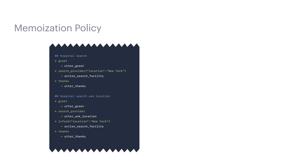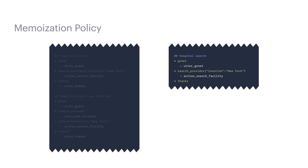Now let's talk about the actual policies available at Rasa. Memoization policy: this is one of the simpler policies. It mimics the stories it was trained on. Depending on what max history parameter was set, it tries to match the fragment of the current story with the stories in the training data. If it finds a match, it predicts the next action with a confidence of one. Otherwise, it predicts none with a confidence of zero. Memoization policy is not intended to be used on its own and is usually combined with other policies, because this policy is optimized for precision and not recall. Every mistake it makes is fatal because the policy is 100% certain about every prediction it makes.